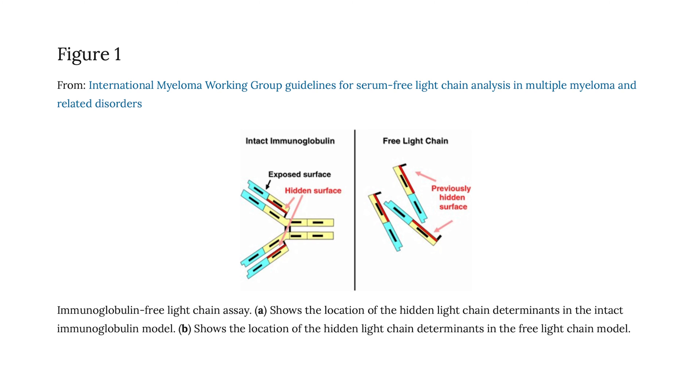The myeloma cell, just like a healthy plasma cell, makes a protein called an immunoglobulin that is released into the blood. Because the myeloma cell is not completely functional, its protein-making mechanism may be altered — it might spew out parts of the protein rather than the entire protein, and those parts are called free light chains. Myeloma cells can produce both an M-spike and free light chains, which is why it's so important to do the full spectrum of SPEP, immunofixation, and free light chain assays.